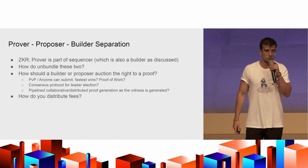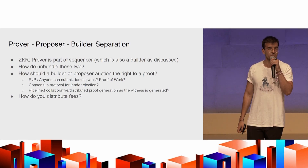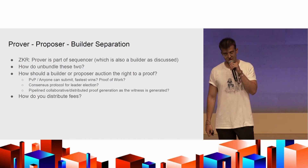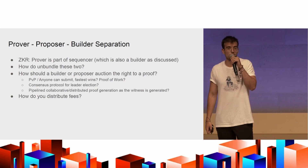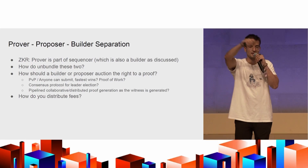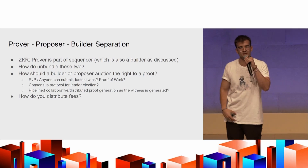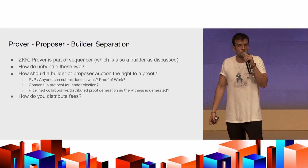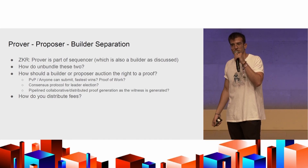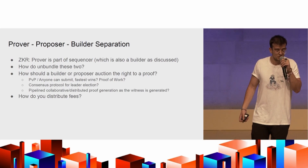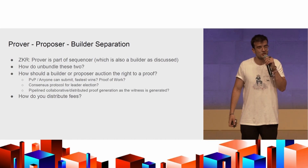I don't know exactly how that will look, but if anybody is interested in talking to me about it, please find me after the talk. The final question is how do you distribute the fees — the perennial question in the MEV supply chain, or 'compositional game theory' as I hear it called. Where does value accrue? I also don't know, but it's something interesting to think about.